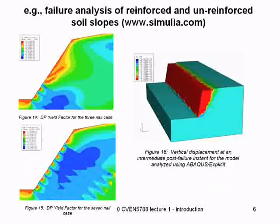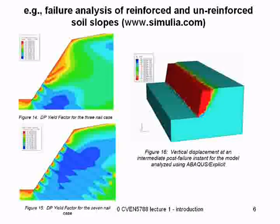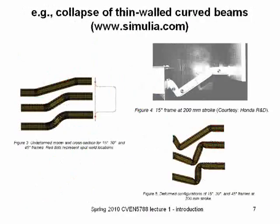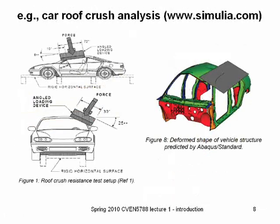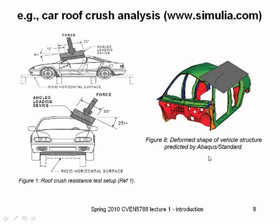For quasi-static problems in Abaqus Explicit, it still has to calculate a stable time step — unless it has dynamic relaxation implemented, which I'm not certain about — to reach the eventual quasi-static solution. This also shows the simulation of collapse or buckling of thin-walled curved beams, which involves nonlinear finite strain as well as large deformations. Another example is a car roof contact pressure analysis.